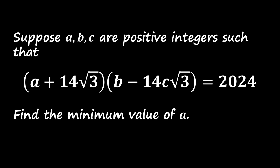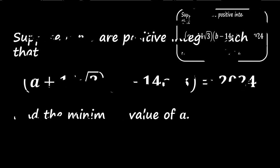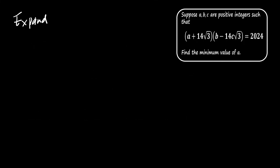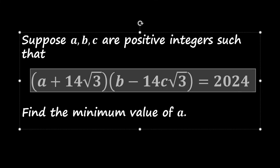The presence of root 3 indicates that we will be dealing with both rational and irrational components. To proceed, we'll expand the product on the left-hand side. We expand the terms as follows.